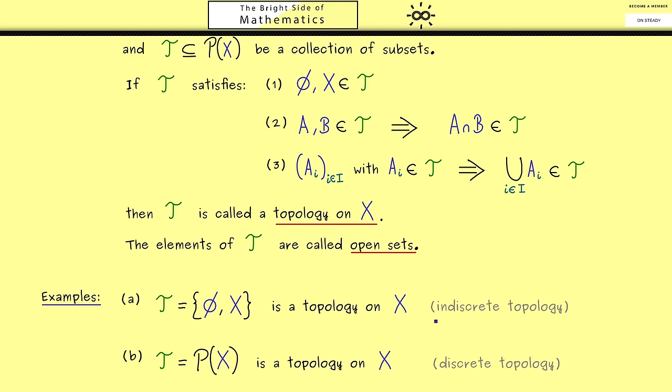On the other hand, the first example is often called the indiscrete topology. Of course, both examples are not the most interesting topologies, but they are edge cases you should always have in mind.